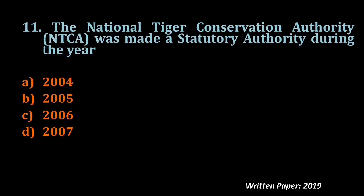Question number eleven: The National Tiger Conservation Authority (NTCA) was made a statutory authority during the year — 2004, 2005, 2006, or 2007. The NTCA is the supreme authority for maintaining the tiger status in India, working with forest departments and research institutes for wildlife conservation. It was made a statutory authority under the Wildlife Protection Act 1972. The answer is 2006.